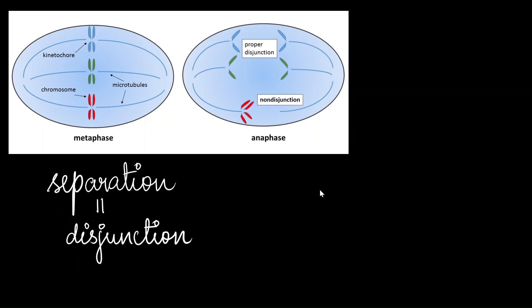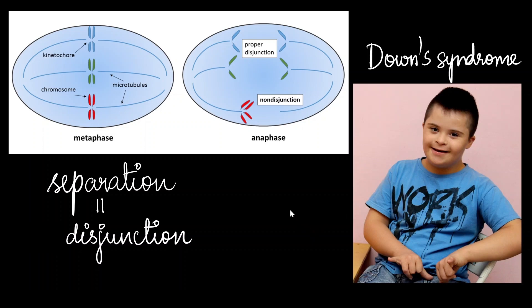This process is so important that when non-disjunction occurs, it can lead to diseases like Down syndrome. Down syndrome is due to the non-disjunction of the 21st chromosome during gamete formation. Trisomy means that there are three copies of chromosome 21 instead of the normal two copies.